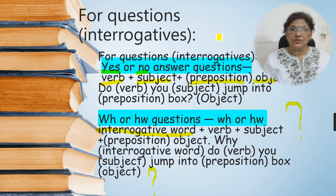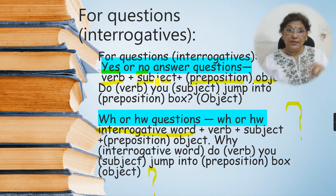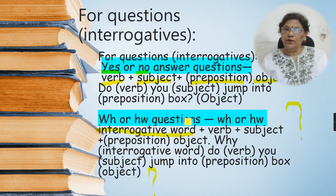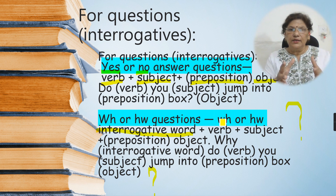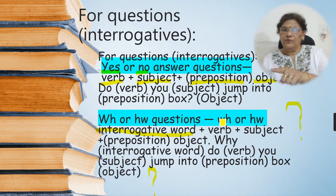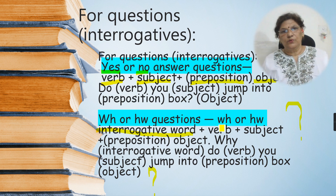For questions which have yes or no answer — these are interrogatives. We have to place the verb first, then the subject, and then the preposition and object. For example, 'Do you jump into box?' — this has a yes or no answer. Then the second type is WH or HW questions. Broadly speaking, first we have yes or no type questions — interrogatives — and then WH or HW questions. So the structure is: interrogative word plus verb plus subject, and preposition and object. Object sub mein last mein aayega.